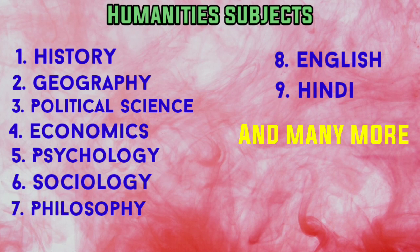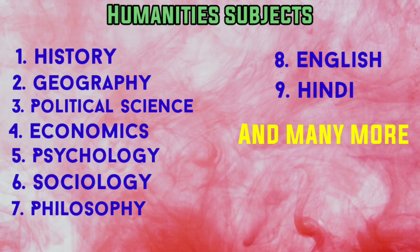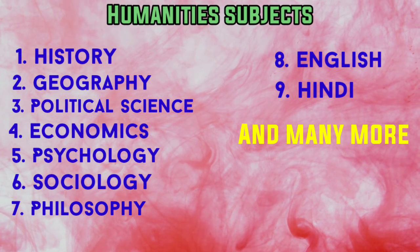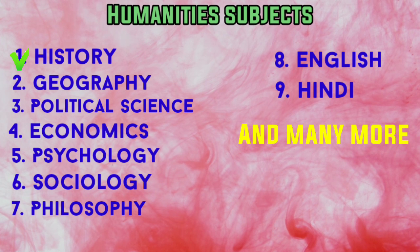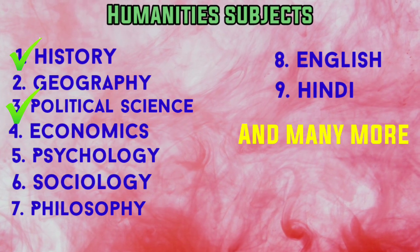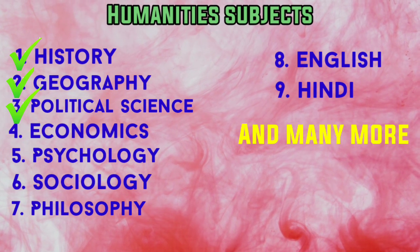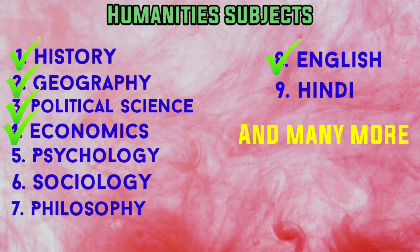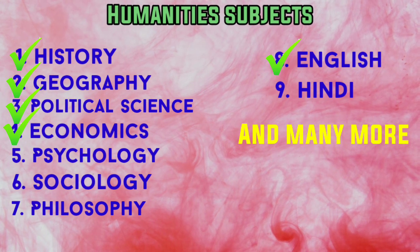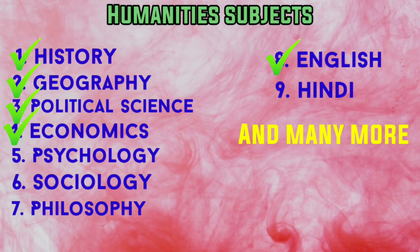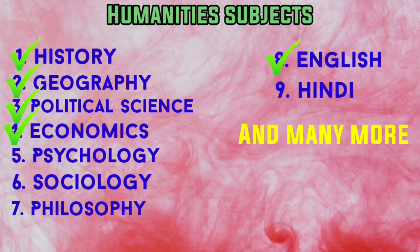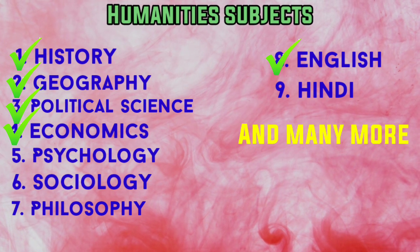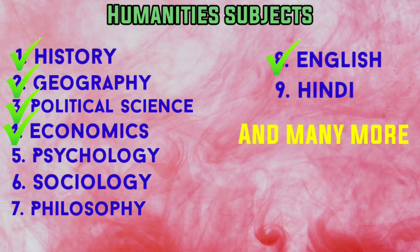According to me, the most important subjects for the humanities stream are: first, History; second, Political Science; third, Geography; fourth, English; and fifth, Economics. These 5 subjects are very important and every humanities student should take them — but of course, you can choose any subject according to your own interests.